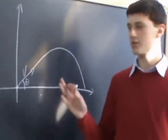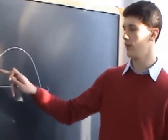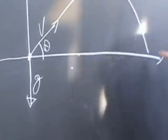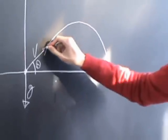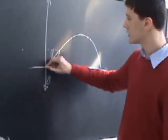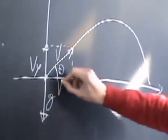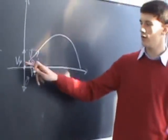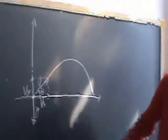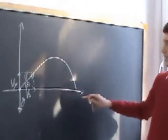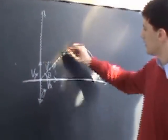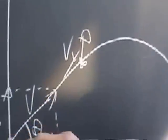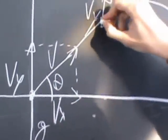We can consider, to describe this motion, the components of velocity or also the components of acceleration g, which is constant along the entire path. Considering these two vectors, vy and vx, we can see that acceleration g influences only vy, and vx is constant during all the trajectory. For example, in this point, we can see that the magnitude of vy is less than in this first position, but vx is the same.